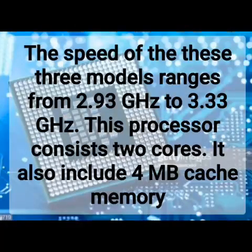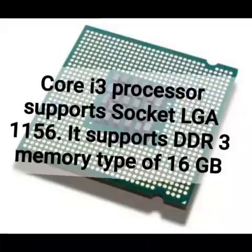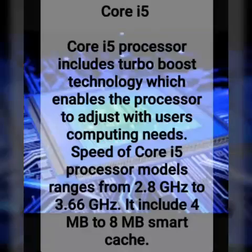These 4 models have a speed range of 2.93 GHz to 3.33 GHz. This processor has 2 cores and 4 MB of cache memory. It supports DDR3 memory.